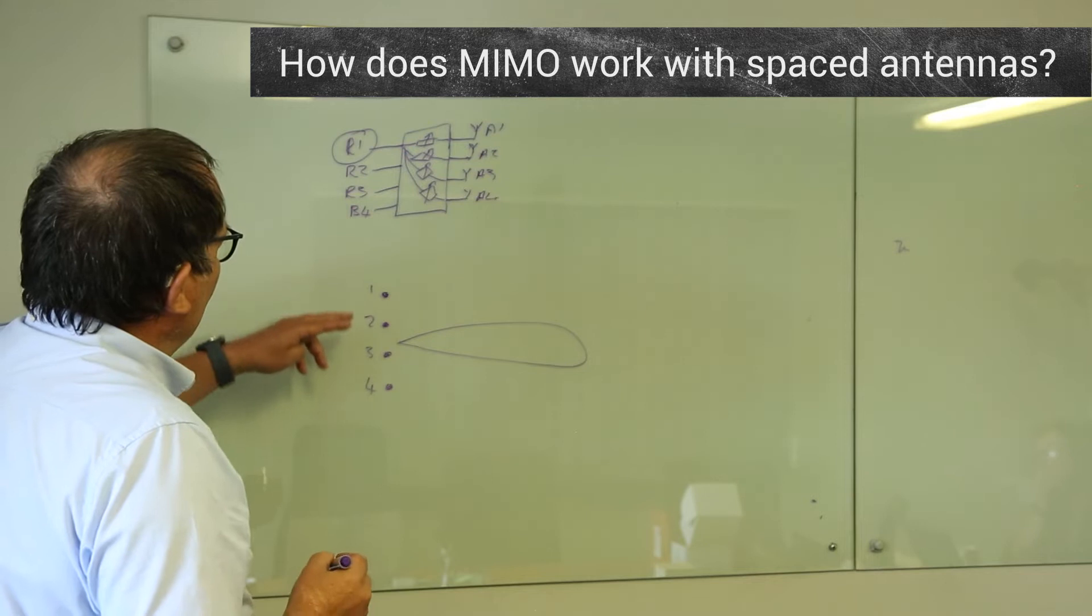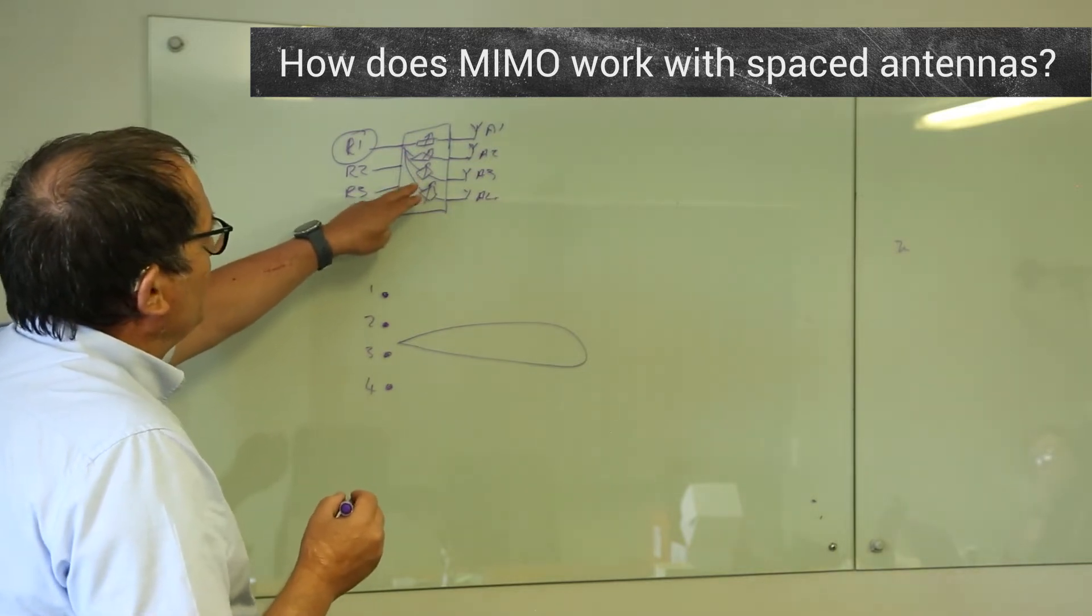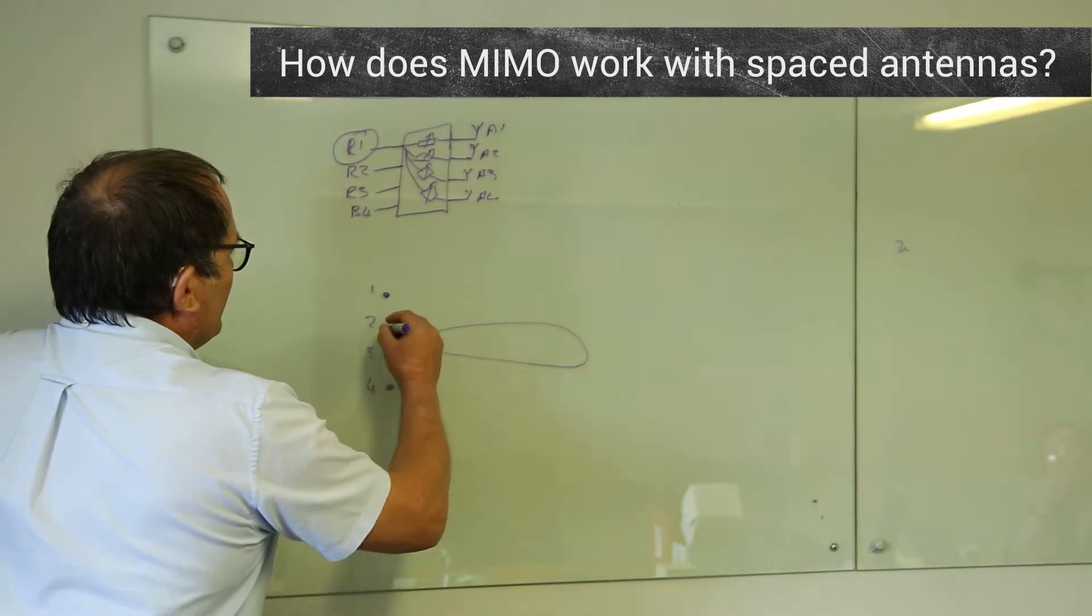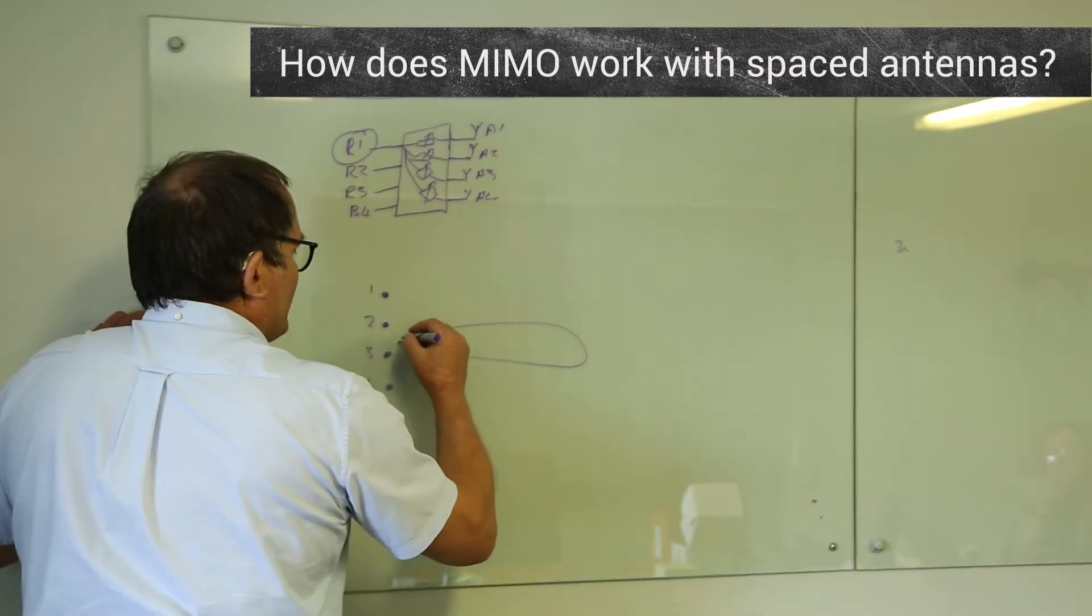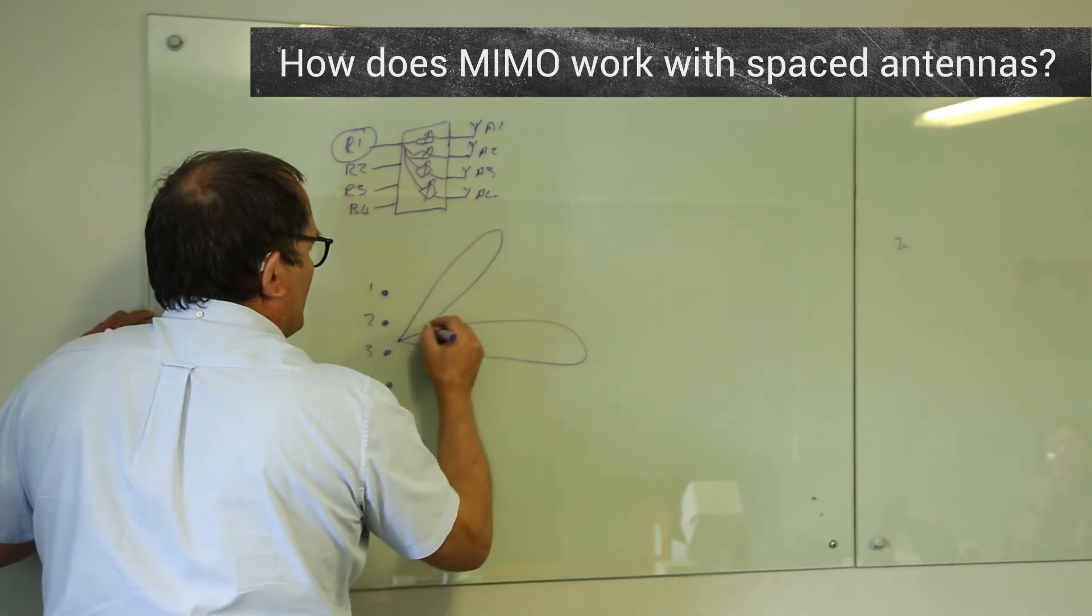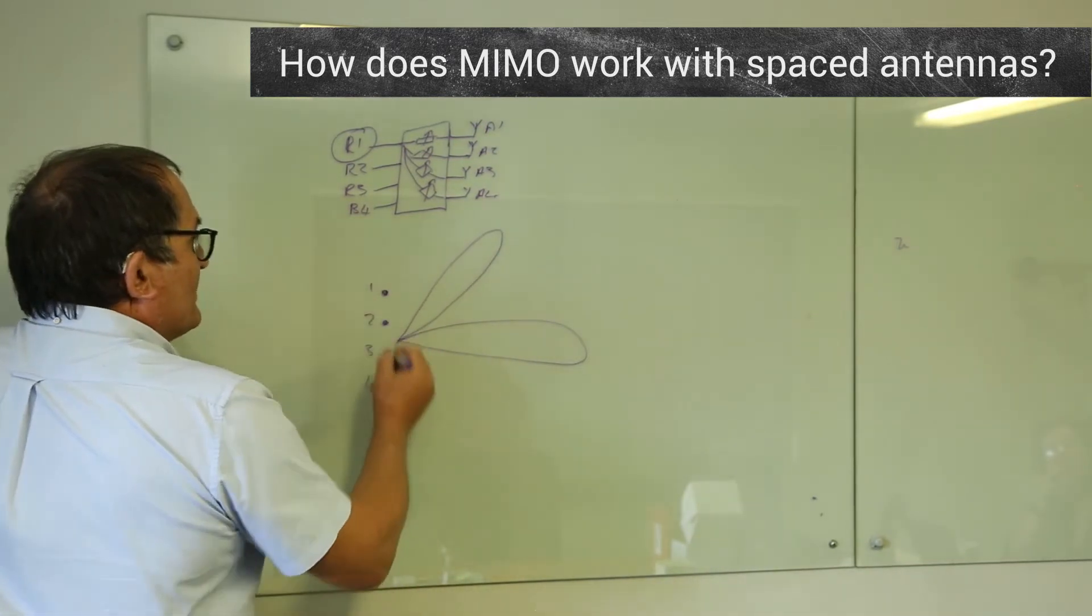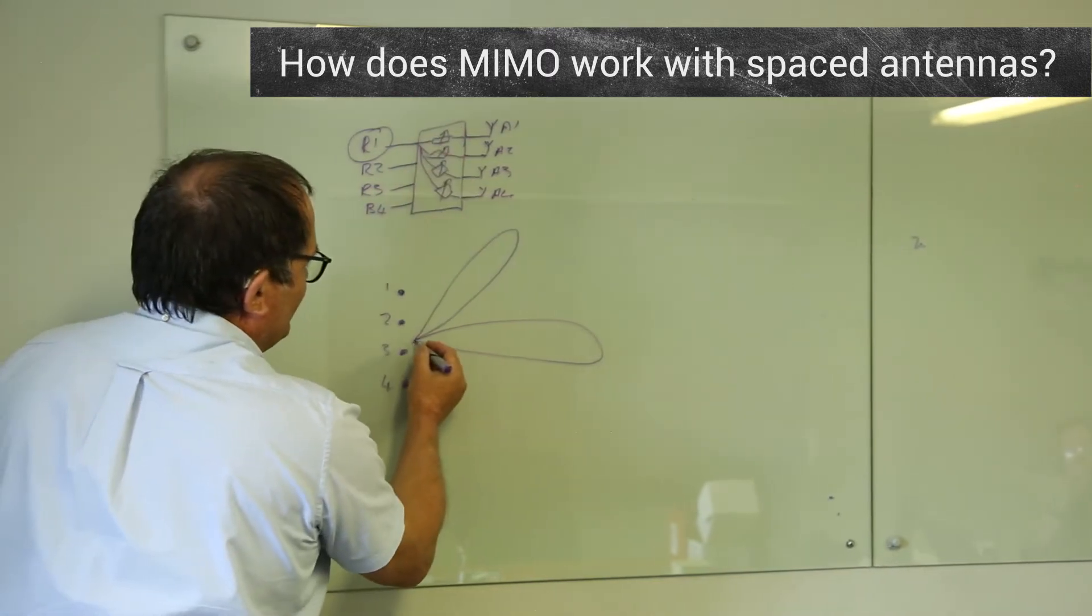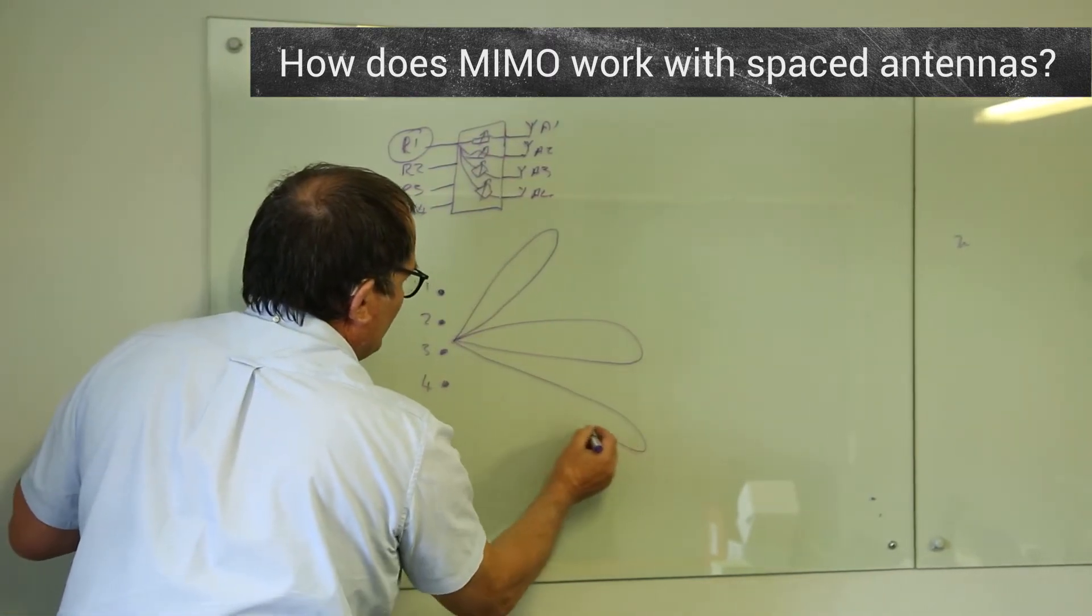On the other hand, if you connect them with a progressive phase, that's 0, 30 degrees, 60, 90, you can create a beam with the same antennas, just connected with different phases. You can create a beam that points that way. You can connect them 0, minus 60, minus 90, and you can get a beam pointing that way.